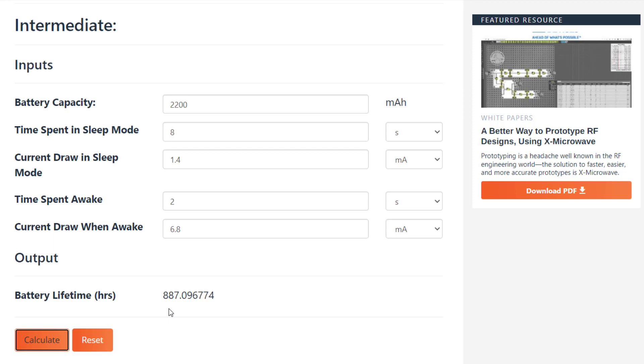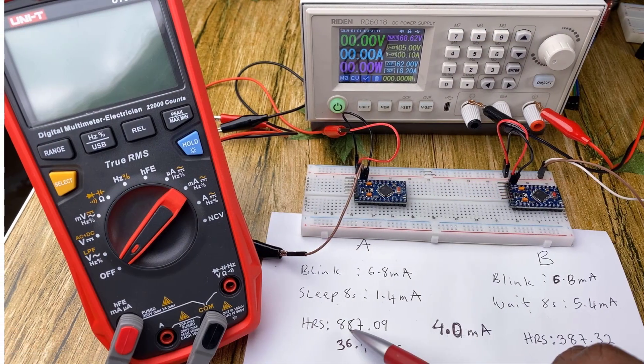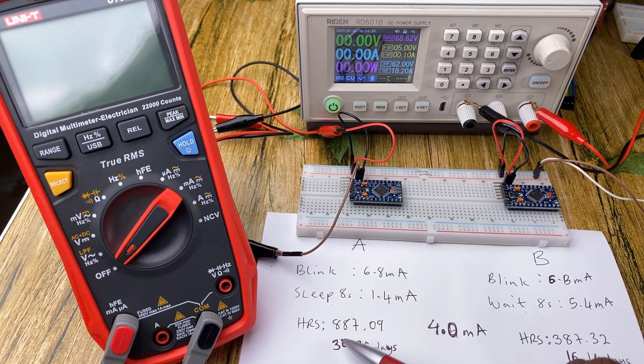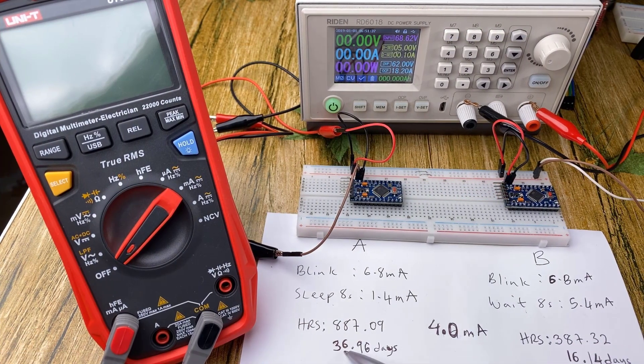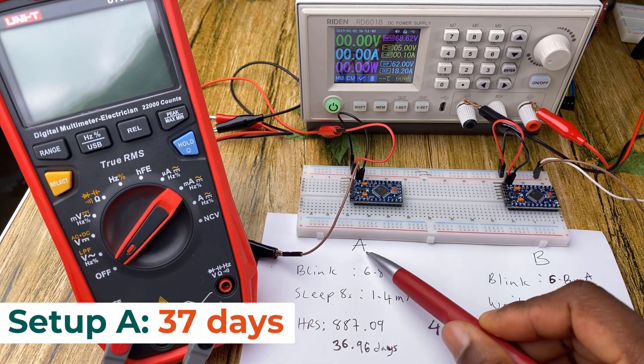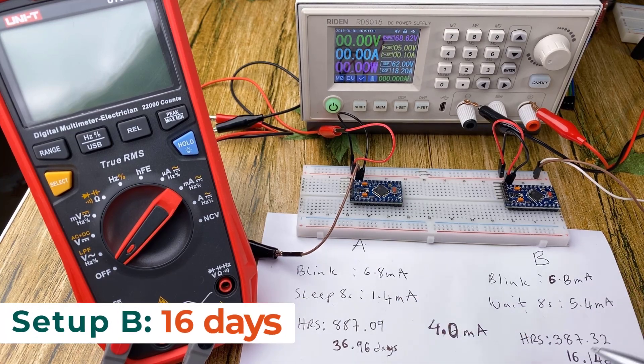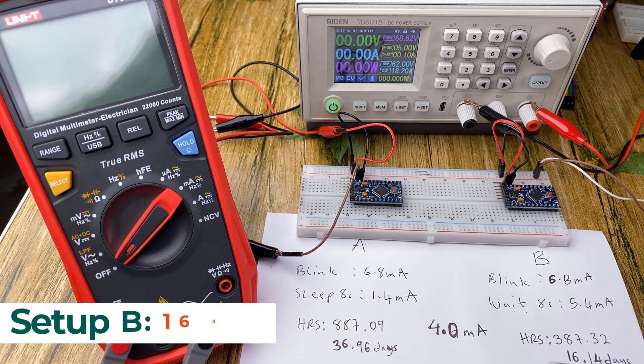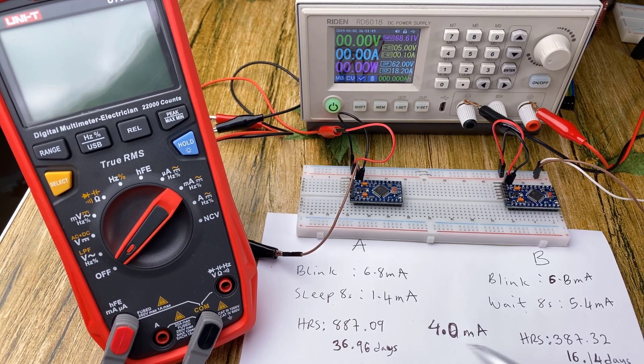And this was achieved by sleeping during that 8 second period and saving 4 milliamps in the process. Further dividing the hour values by 24, we have 36 days or approximately 37 days for setup A and for setup B we have 16 days. So you can just see the huge difference between the two.